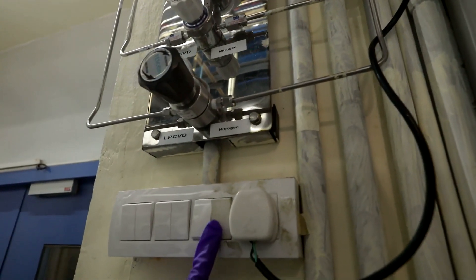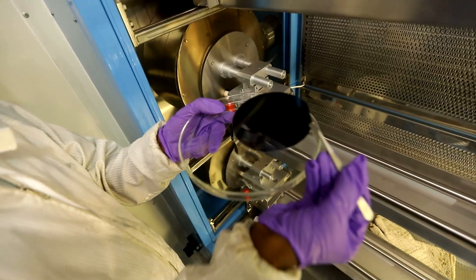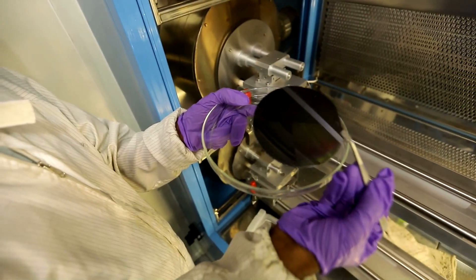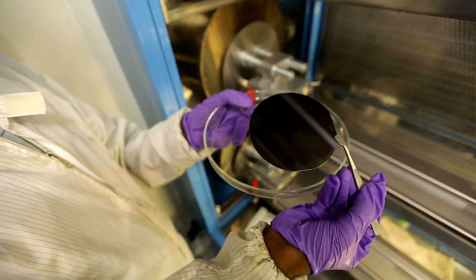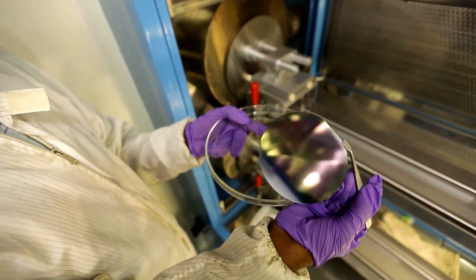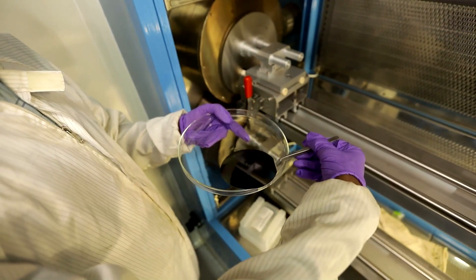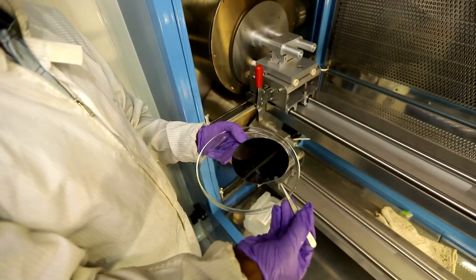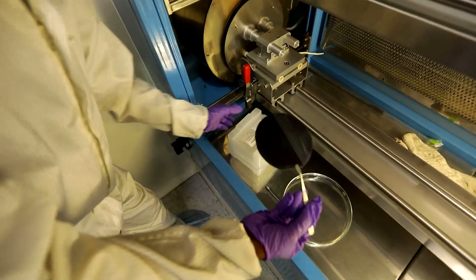During the deposition, a phosphosilicate glass, PSG, is formed on the surface of the silicon substrate. The PSG glass is a mixture of phosphorus pentoxide, P2O5, and silicon dioxide, SiO2. This glass is etched using buffered HF in the next step. We can measure the conductivity of this wafer using the four probe technique.